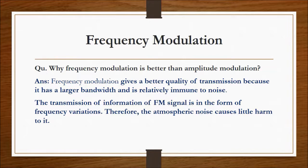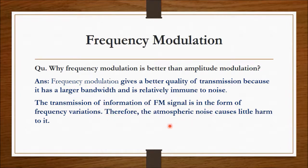Why is frequency modulation better than amplitude modulation? The answer is: frequency modulation gives a better quality of transmission because it has a larger bandwidth and is relatively immune to noise. The transmission of information in an FM signal is in the form of frequency variations, and therefore atmospheric noise causes little harm to it.